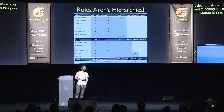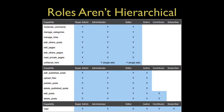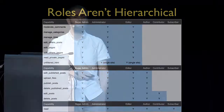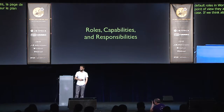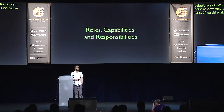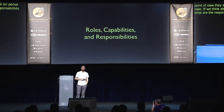Although they may seem it, roles in WordPress aren't actually hierarchical from a technical point of view. This is the roles and capabilities page from the WordPress codex. The default roles kind of are hierarchical, but purely from a technical point of view they aren't. If we think about roles, capabilities, and responsibilities — what are the responsibilities of each role in WordPress — we can start to see how the API isn't hierarchical.